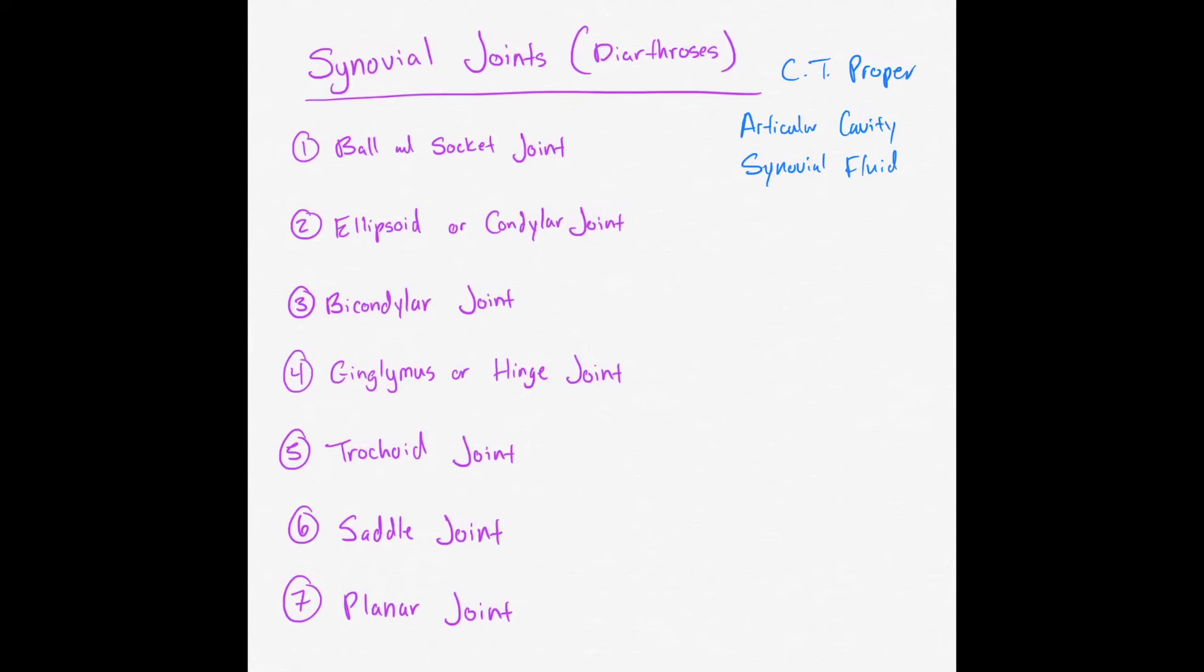We have a ball and socket joint, we have ellipsoid or condylar joint, we have bicondylar joint, ginglimus or hinge joints, trochoid joint, saddle joints, and planar joints. And I'm going to go through each one of them and kind of talk about their characteristics.